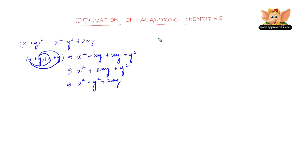Now let us look into another one, which is x minus y the whole square. x minus y the whole square is x square plus y square minus 2xy. Let us see how this comes about.